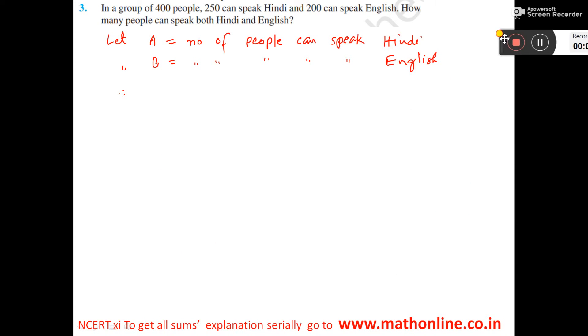I have considered A equal to the number of people who can speak Hindi, B as the number of people who can speak English. Here we have a group of 400 people.